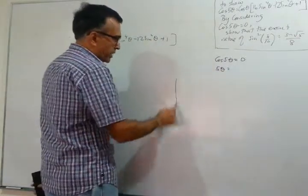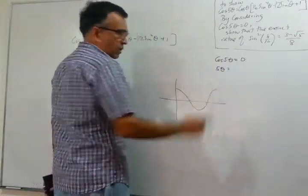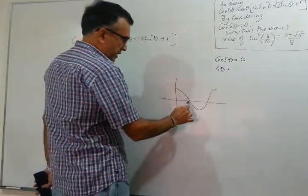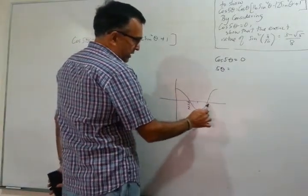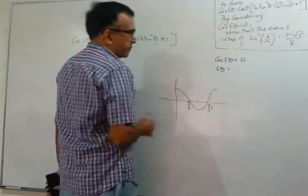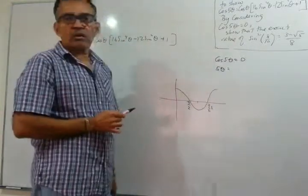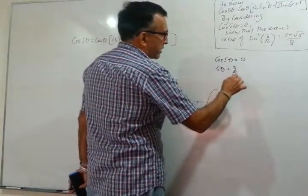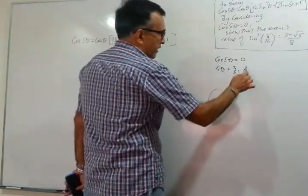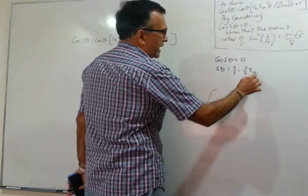This is your basic cos wave. This is π over 2, and this is π, and this is 3 over 2 π. So if I write cos 5θ equals 0, 5θ, we can start with π over 2, we have 3 over 2 π, and so on.